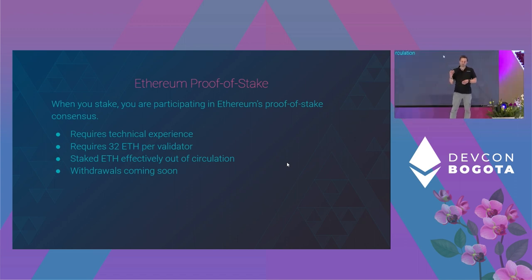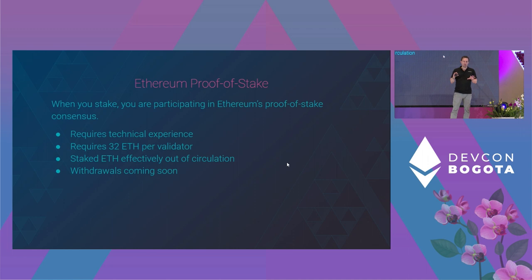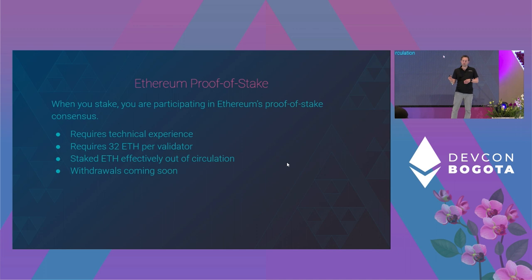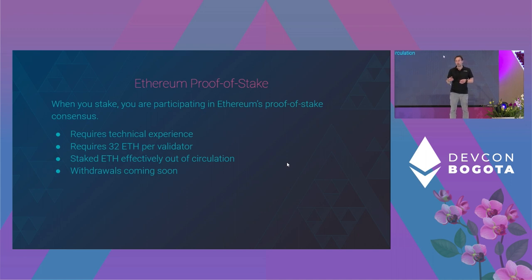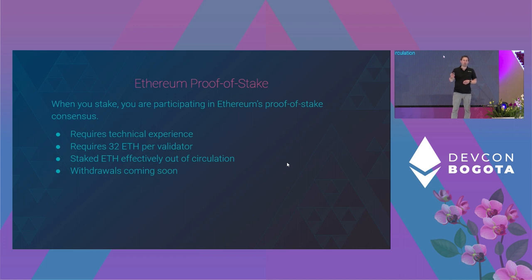You also need a fixed 32 ETH per validator. The staked ETH is naturally illiquid — it exists on the beacon chain earning rewards but you can't really use it for anything else, which is by design. Most of the 32 ETH that you stake is not actually at risk except under the most dire consequences. Currently it's also a one-way thing, so withdrawals are coming soon but at the moment you're staking and that's it.